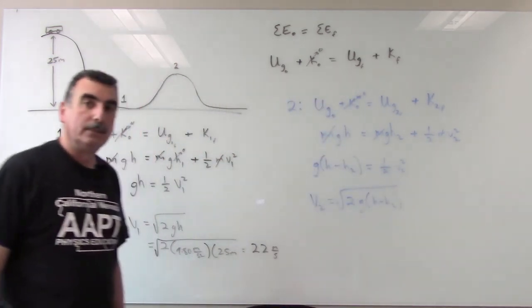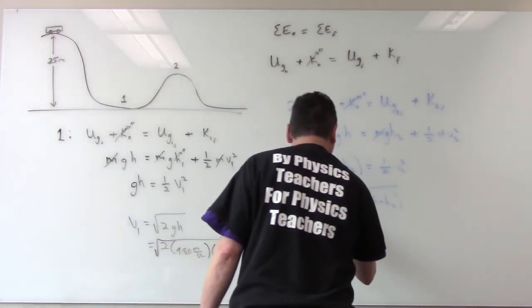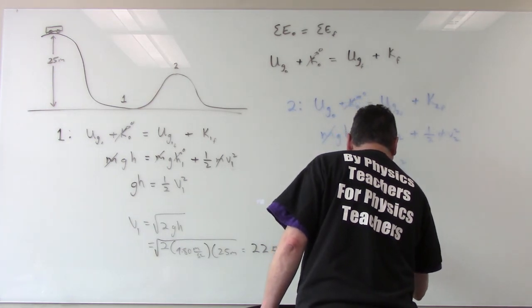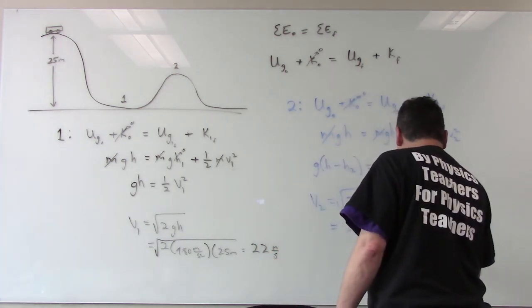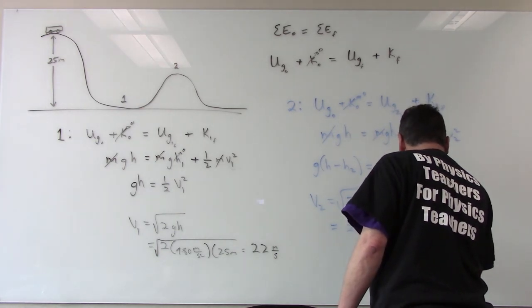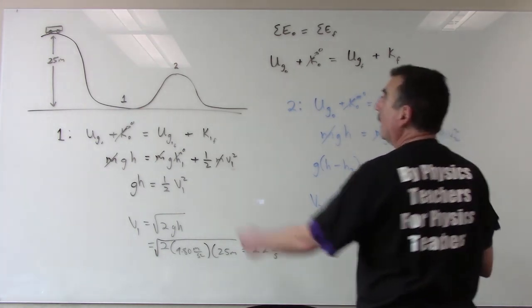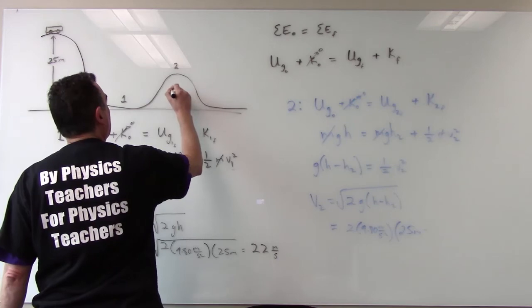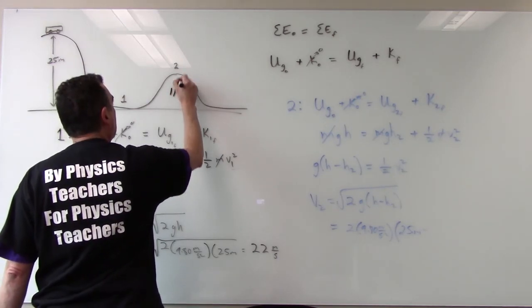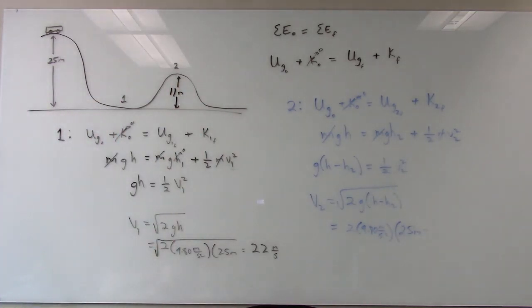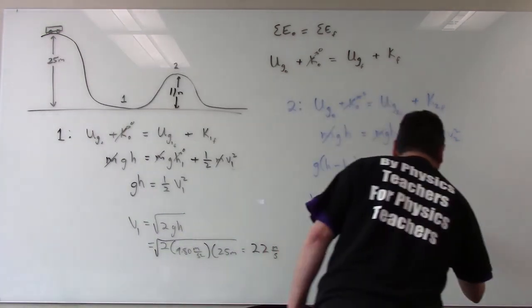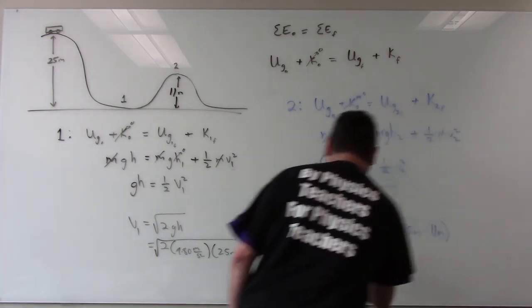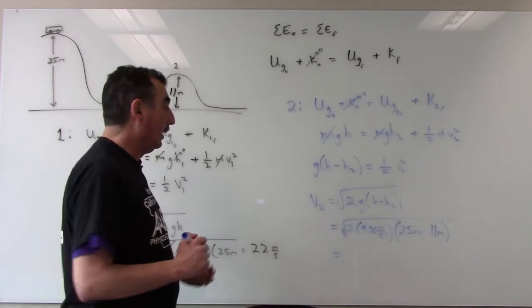Plug in our values and we should have a velocity so 2 times 9.80 meters per second square 25 meters minus, oh I didn't put a height for that. Well let's do that now so let's give it a height of eleven meters. So let's subtract eleven meters square root this whole thing and what we should get is seventeen meters per second.